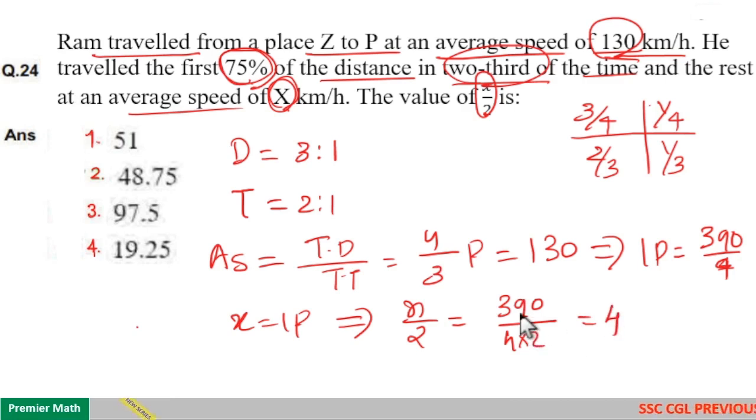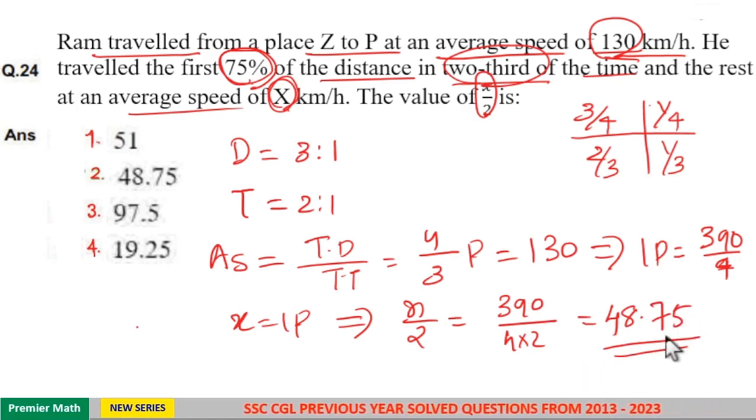Eight goes four times in 32 remaining seven. Eight goes eight times in 64 remaining six. Eight goes seven times in 60 remaining. Eight goes five times in 40. So 48.75 option 2 is your answer.